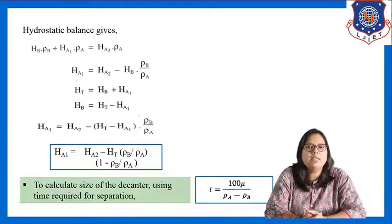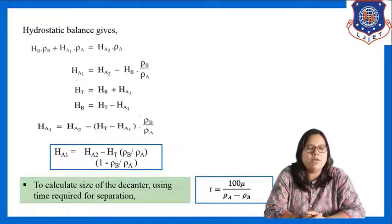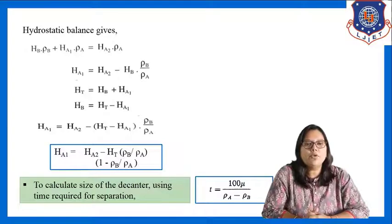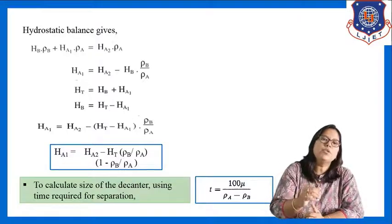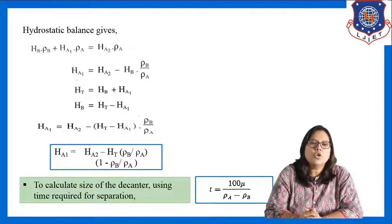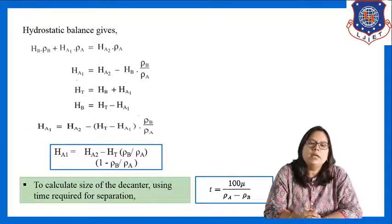If we have to calculate the size of the decanter, we use the time required for separation. We can calculate the size of the decanter if we have the time required for the separation. The time required for separation is calculated using the equation: T = 100·mu / (rho_A − rho_B), where T is the time required for separation. This is all about the gravity decanter.